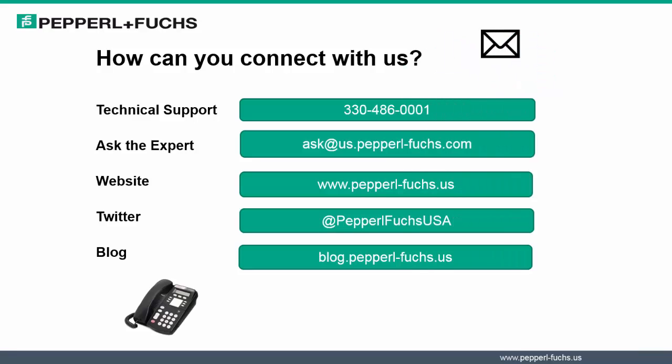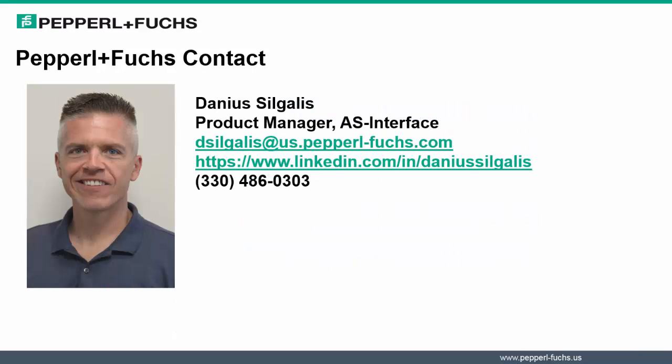Let's discuss how you can connect with us here at Pepperl & Fuchs. There are a number of ways this can be possible. First, the tech support number — I encourage each of you to call us and talk to our applications engineers who are knowledgeable on AS Interface. Through email correspondence, you can use the expert email to correspond. Our website, Twitter, and blogs are also great resources for getting more information on AS Interface. Thank you for coming to the webinar today. My contact information is included on the slide — I encourage each of you to keep in touch with me on any questions or concerns you may have on AS Interface. Thank you.